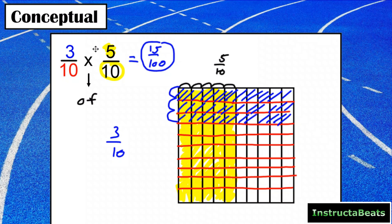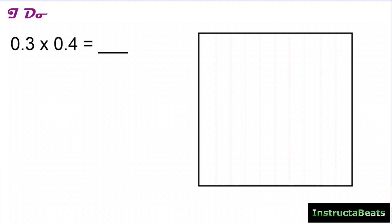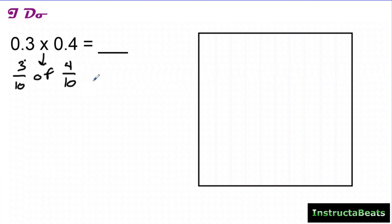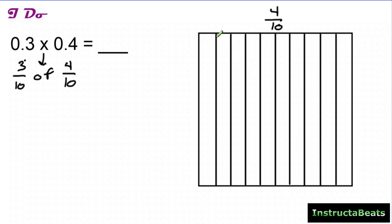This is what it looks like finding a fraction of another fraction. Decimals and fractions are the exact same thing — 3 tenths in decimal form or fraction form is the same value. So I want 3 tenths of 4 tenths. First I take my 2nd factor, 4 tenths, and split my area model into 10 equal groups because that's my denominator, shading in 4 of those 10 pieces.